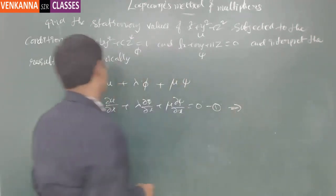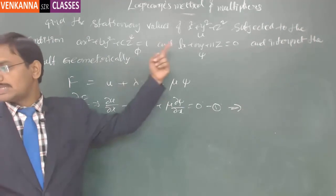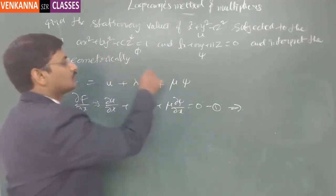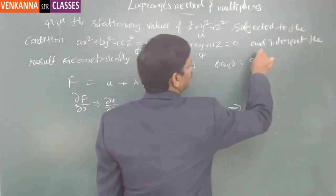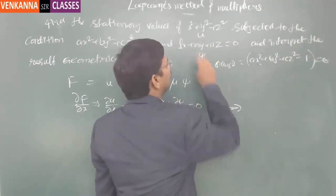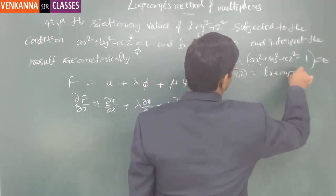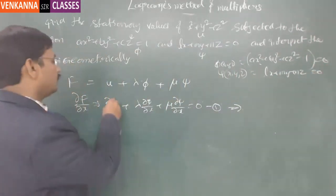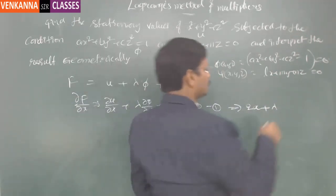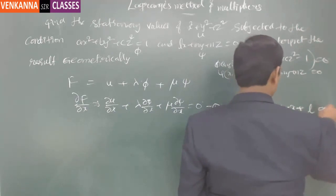Here u = x² + y² + z², φ(x,y,z) = ax² + by² + cz² − 1 = 0, and ψ(x,y,z) = lx + my + nz = 0. Now ∂u/∂x = 2x, so equation 1 becomes 2x + λ(2ax) + μl = 0.